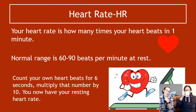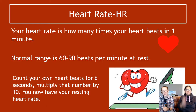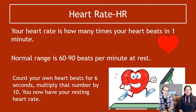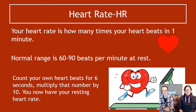Heart rate (HR) is how many times your heart beats in one minute. It's important to note it's per minute — if given a 15-second count, multiply by four. For normal people, resting heart rate ranges from 60 to 90 beats per minute. You can measure your own by counting beats for six seconds and multiplying by ten.